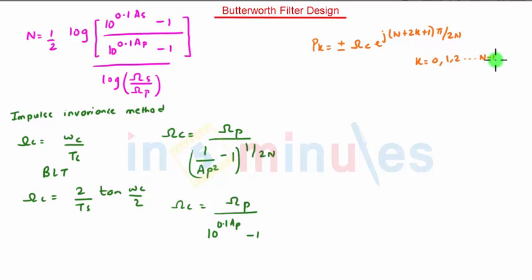Now if the poles are complex conjugate then we can arrange PK as complex conjugate pairs. Sometimes we can arrange as M1 and M1 star, M2 and M2 star. Finally for calculating the system transfer function of analog filter we will use H of S is equal to omega C raised to N upon M minus P1 into M minus P2.